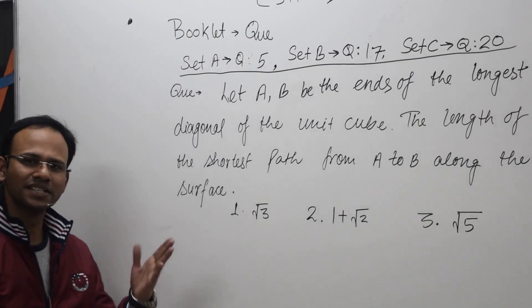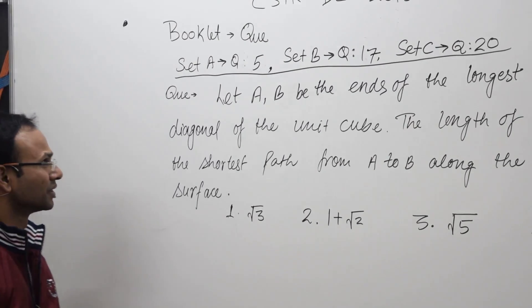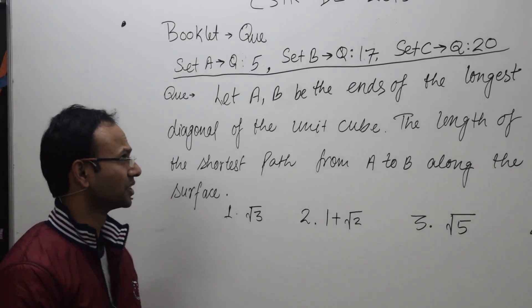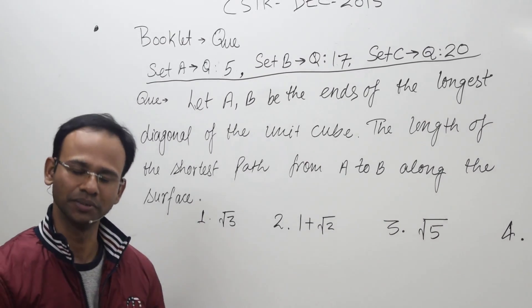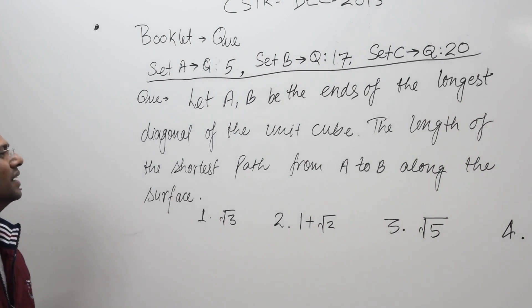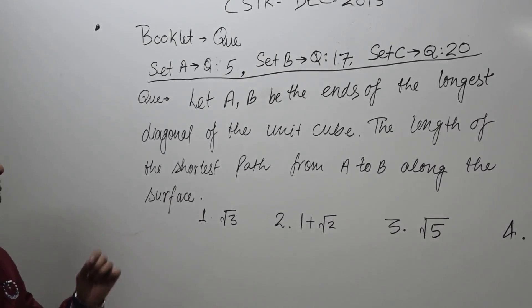Okay, let's discuss this question. This is question number 5 of booklet A, question number 17 of booklet B, and question number 20 of booklet C. The question says: Let A and B be the two ends of the longest diagonal of a unit cube.